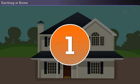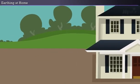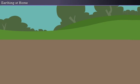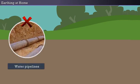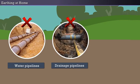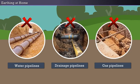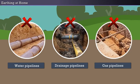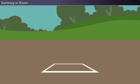Step 1: Select a place near the home to do the earthing. Ensure that the area has no water pipelines, drainage pipelines, or gas pipelines. After ensuring the safety of the area, we can start preparations for the earth pit.